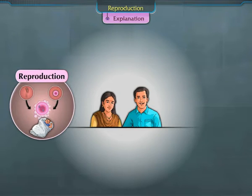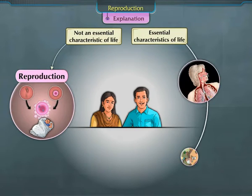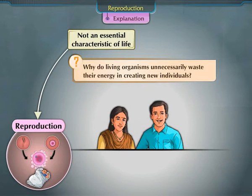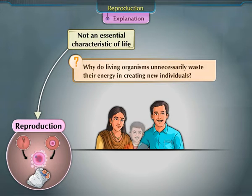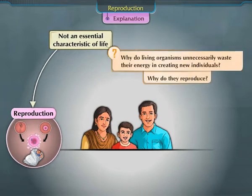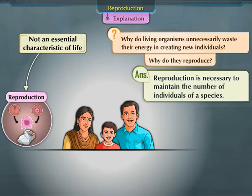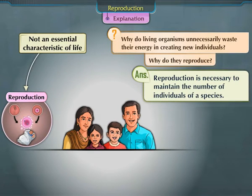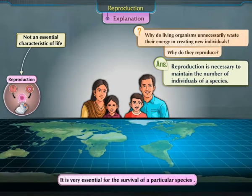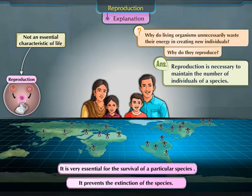If reproduction is not an essential characteristic of life, like respiration and nutrition, then why do living organisms unnecessarily waste their energy in creating new individuals? Why do they reproduce? Reproduction is necessary to maintain the number of individuals of a species. It is very essential for the survival of a particular species and thereby prevents the extinction of the species.